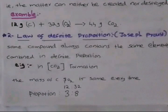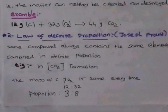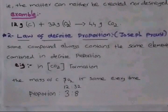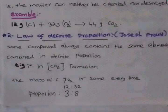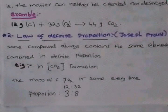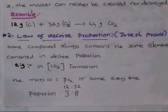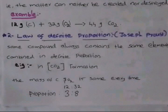For example, in carbon dioxide, the mass of carbon and oxygen is the same every time. The proportion is 12 to 32. We divide the proportion — this is the law of definite proportion.